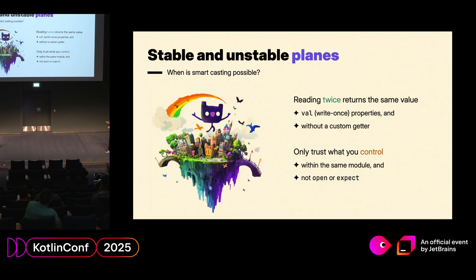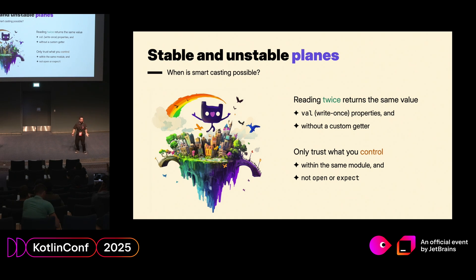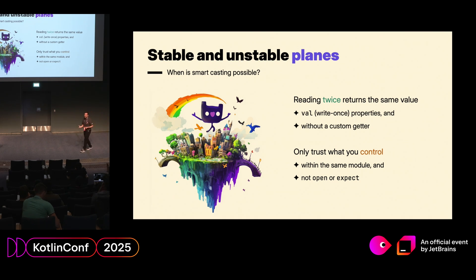There are two simple rules to know when smart casting is allowed. First, you have to be able to read twice and get the same value — otherwise we cannot smart cast. That means everything has to be a val, no vars because vars can change, and you cannot have a custom getter because a custom getter can return different things every time. The second thing is you can only trust what you control. If you have a module and smart casting is not working, sometimes it's just in another module, and you can swap a module from a dependency in a new version. Open and expect functions have the same problem — we don't know whether the implementation will fulfill its contract all the time.